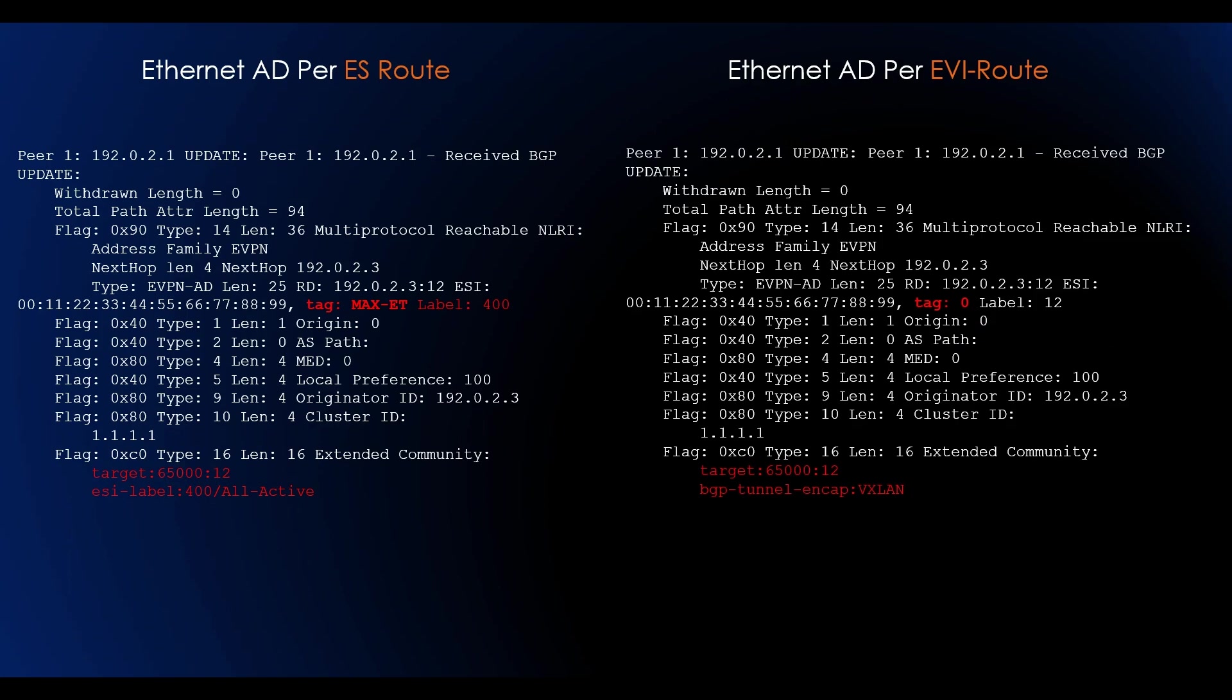In this AD per ES route, the tag is max ET, but whereas in EVI route the tag is zero. In the extended community you will see that it carries the ESI label with the all-active multi-homing with the target, but in case of EVI route, it will carry only the route targets.